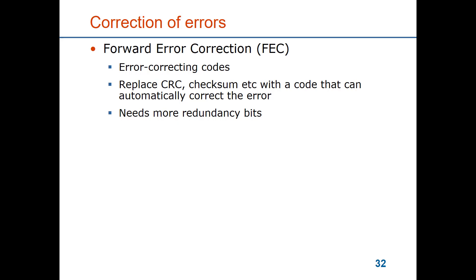The forward error correction needs to have some model of the link. You have to know what is the error probability so that you can design the code so that it's powerful enough to handle all the errors that you could expect to see in a frame, or at least that you can correct them with some given probability of remaining bit errors that cannot be corrected.